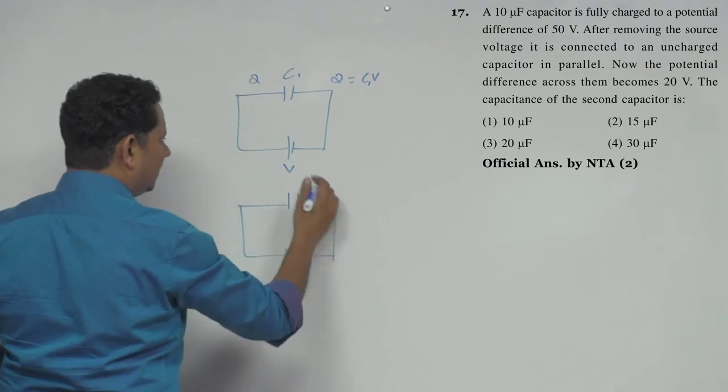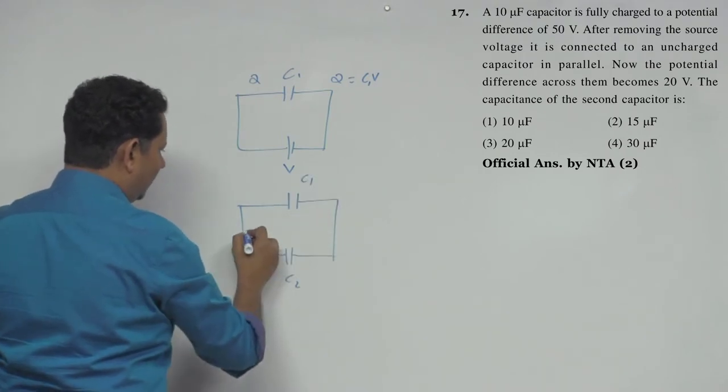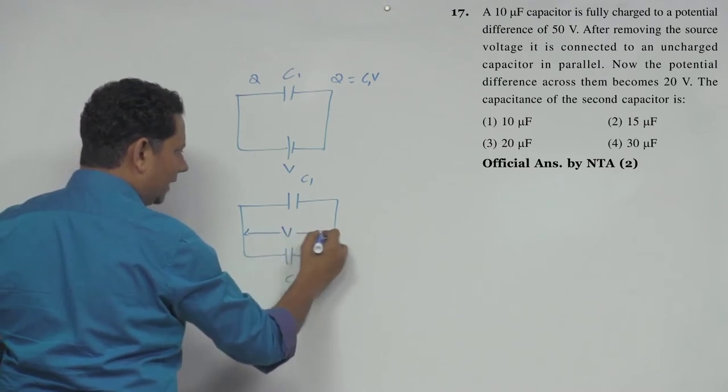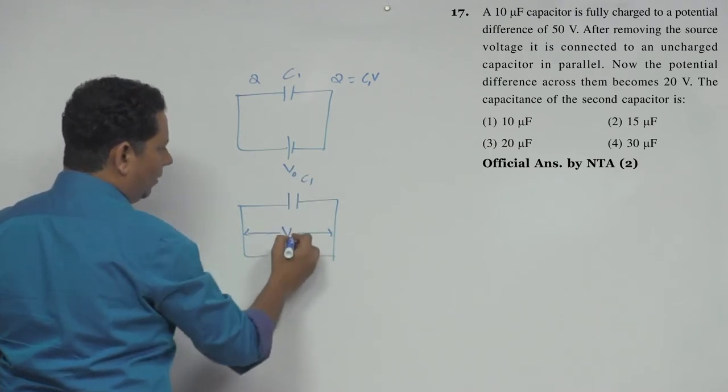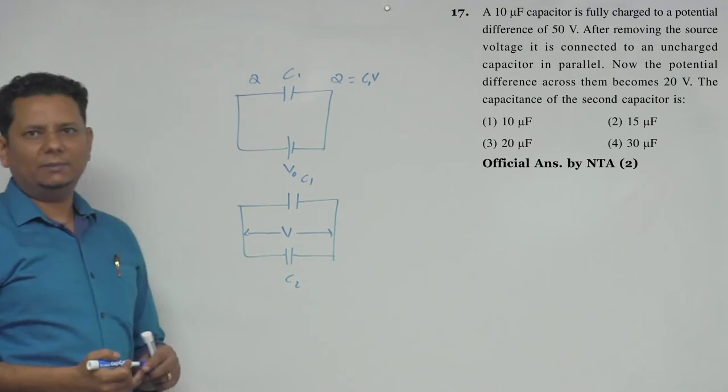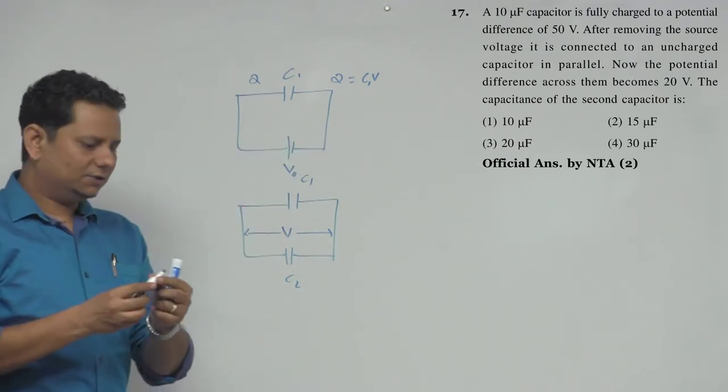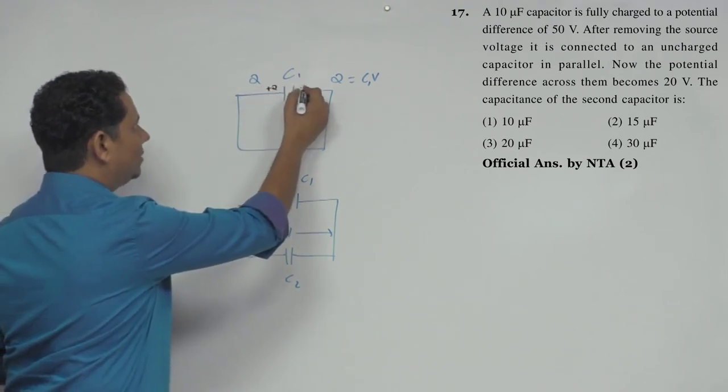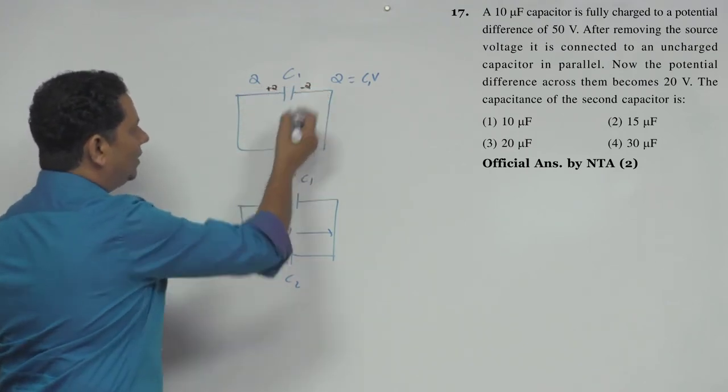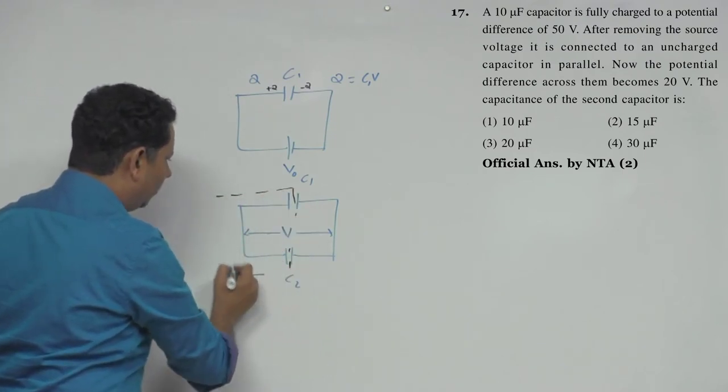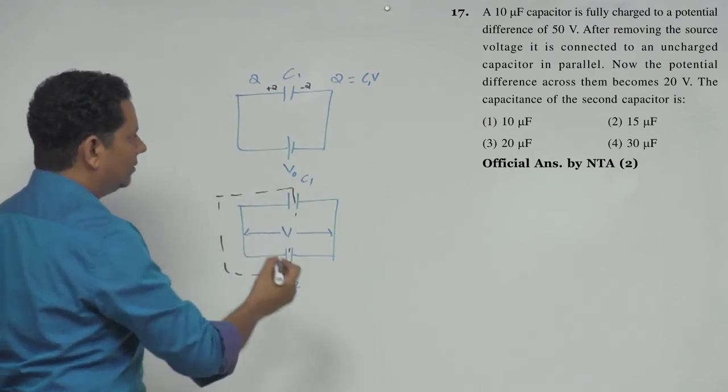Potential आ जाएगा, let's call this V naught, और यह आपका common potential V बाद में आ जाएगा. For this type of question, we use this smart solution: जो आपका total charge यहाँ पे plus Q और minus Q आया था, क्योंकि charge उड़के इधर से उधर नहीं जा रहा है, वो ही charge आपका इन दो plates के बीच में redistribute होएगा.